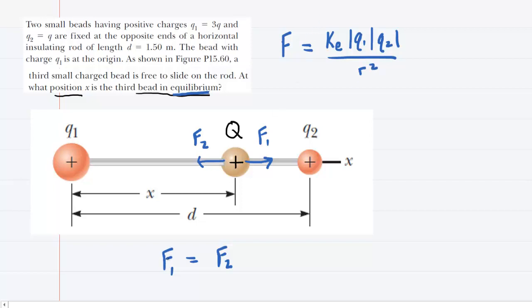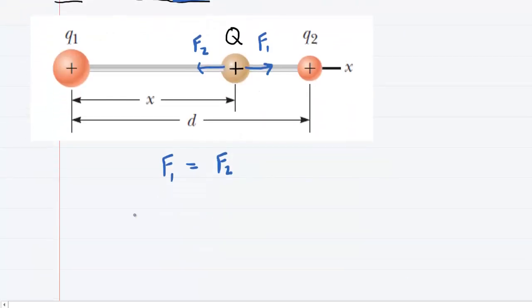With that equation in mind, we can fill in an expression for F1. F1 would equal the constant k sub e multiplied by the magnitude of charge Q1 multiplied by the charge on capital Q, and then we'll divide that by the distance between them squared. We can see that that distance has been labeled x, so we will just have x squared.